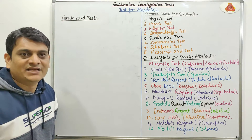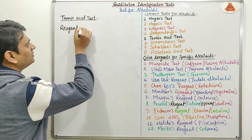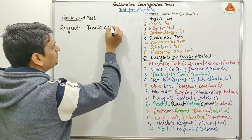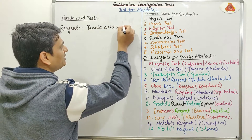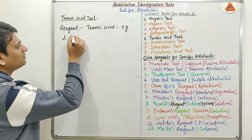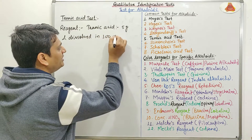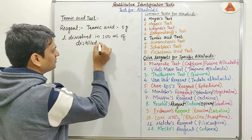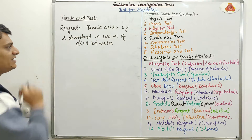For this tannic acid test, first we have to prepare the reagent. As its name suggests, it contains tannic acid. The amount of tannic acid will be 5g, dissolved in 100ml of distilled water. This will be our tannic acid reagent.